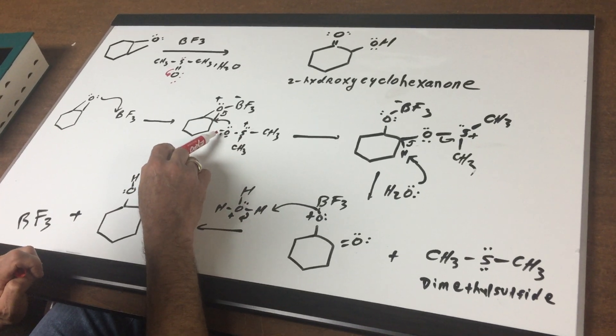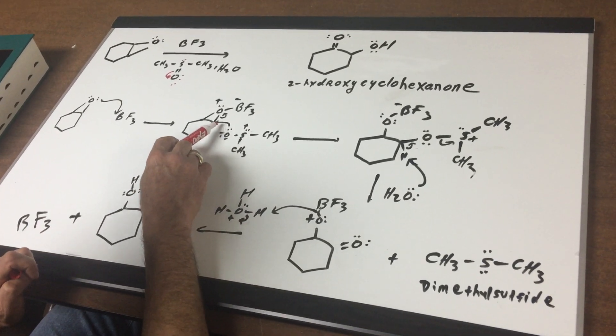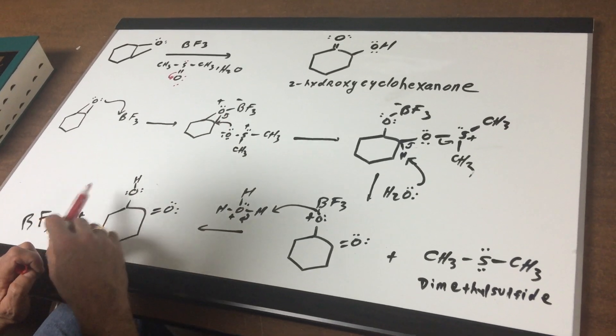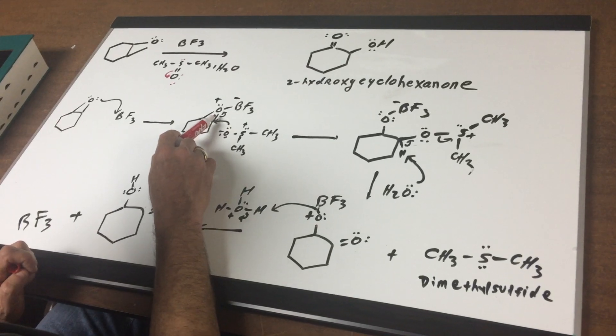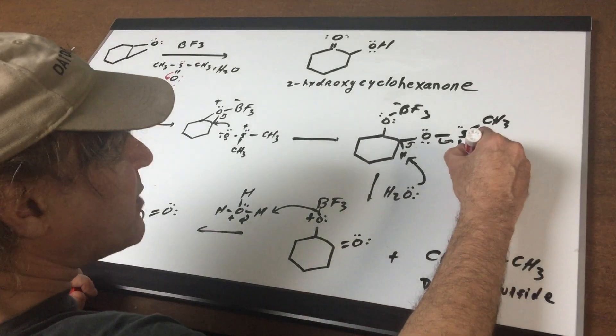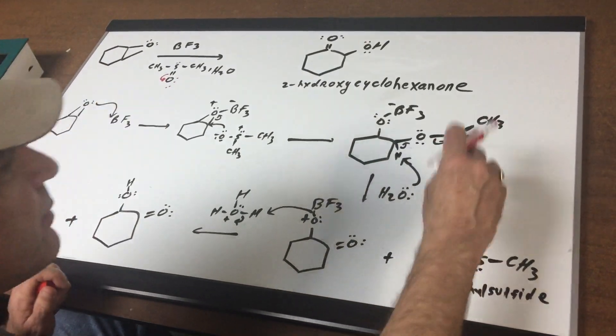The O- is going to now launch a nucleophilic attack and it's going to open up the epoxide. Notice the way the arrows are moving. I attack and move out. That gives this species right here. Let me just make this a little cleaner.